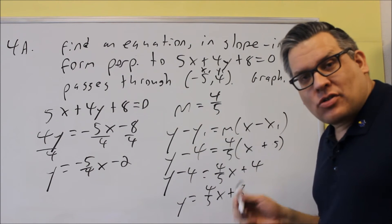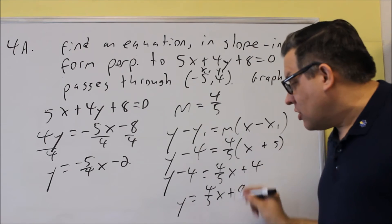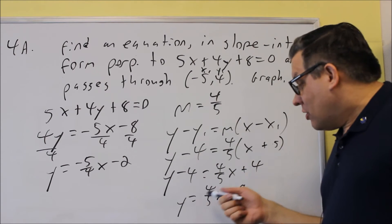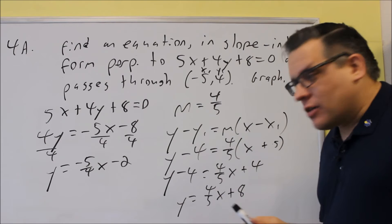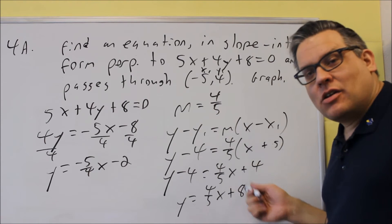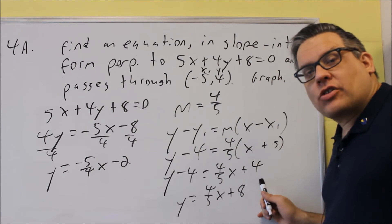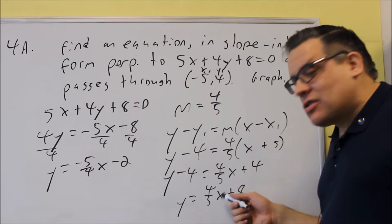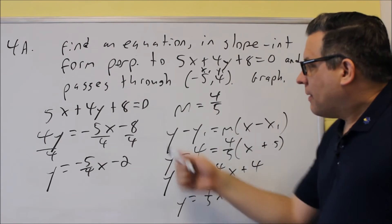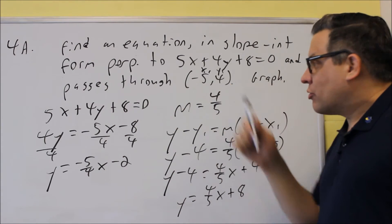Then I'm going to add 4 to both sides, and I get y equals 4 fifths x plus 8. So now this is the correct equation. So on the blank where it says equation, this is what you're going to put. You're not going to put the original one. You want to put your answer that you got. So 4 fifths x plus 8, that would be the correct equation.